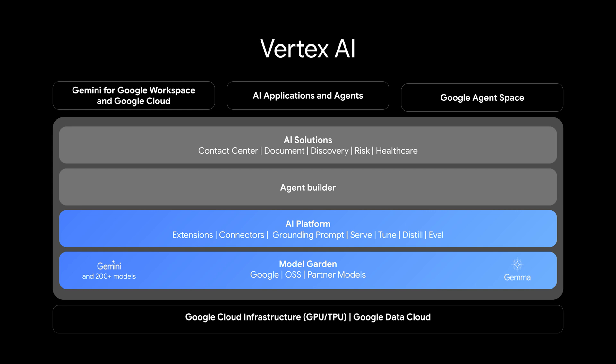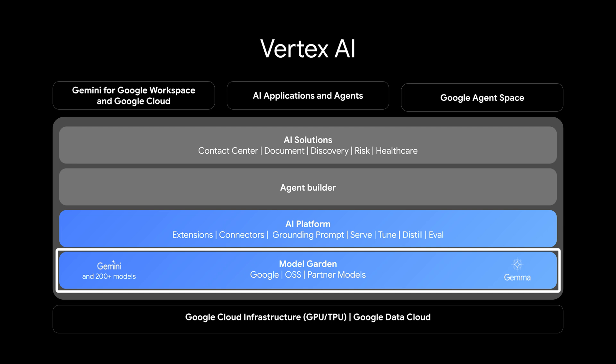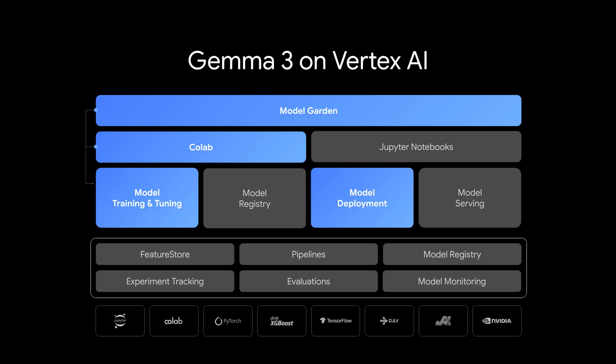A key part of this is the Vertex AI Model Garden — think of it as a curated collection with hundreds of open models, including Gemma 3, all verified and ready for you to use. What's really powerful is how it integrates directly with services like Vertex AI Training and Prediction. This integration, together with training and serving recipes, provides straightforward ways to tune models with your data and deploy them reliably, handling much of the underlying complexity for you.